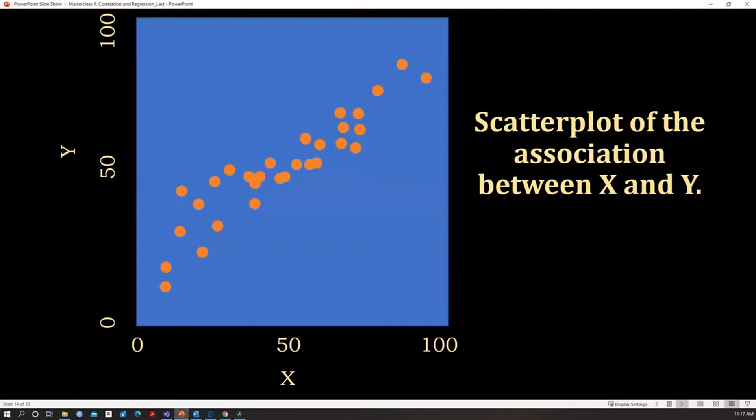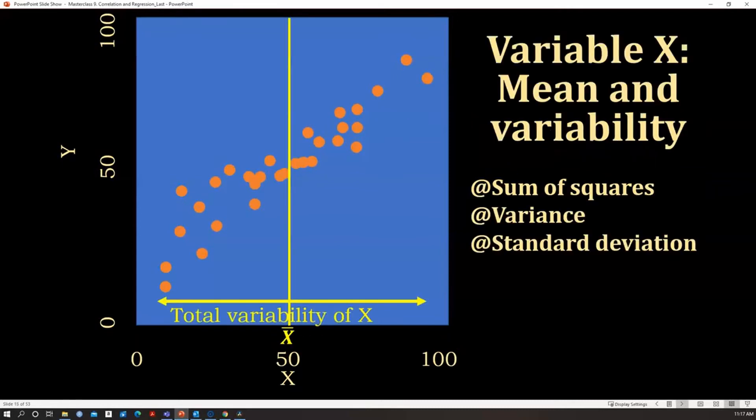Now, we can have a measure of variability of the new variable, the variable X, with a mean represented by x bar, and the variability which can be calculated by the sum of squares, the variance, and the standard deviation, as I explained with variable Y.